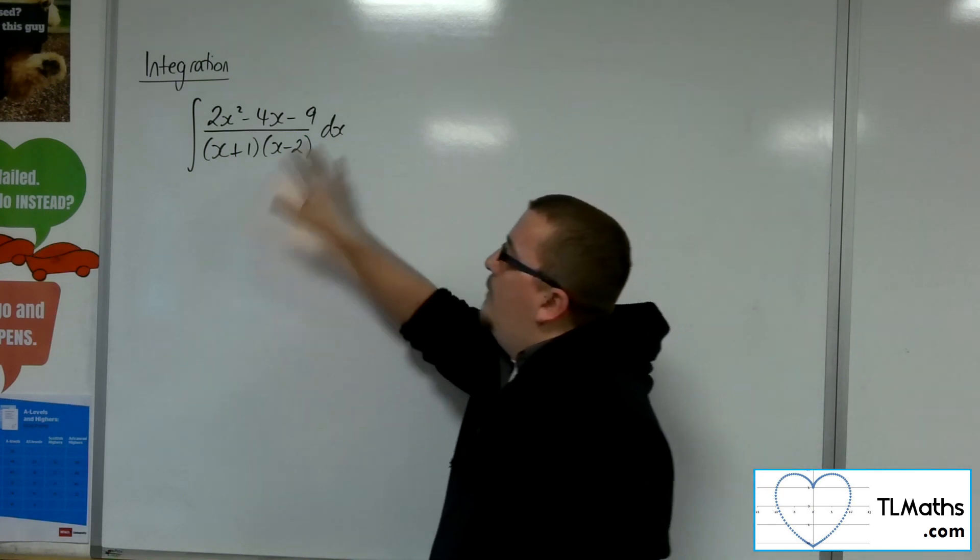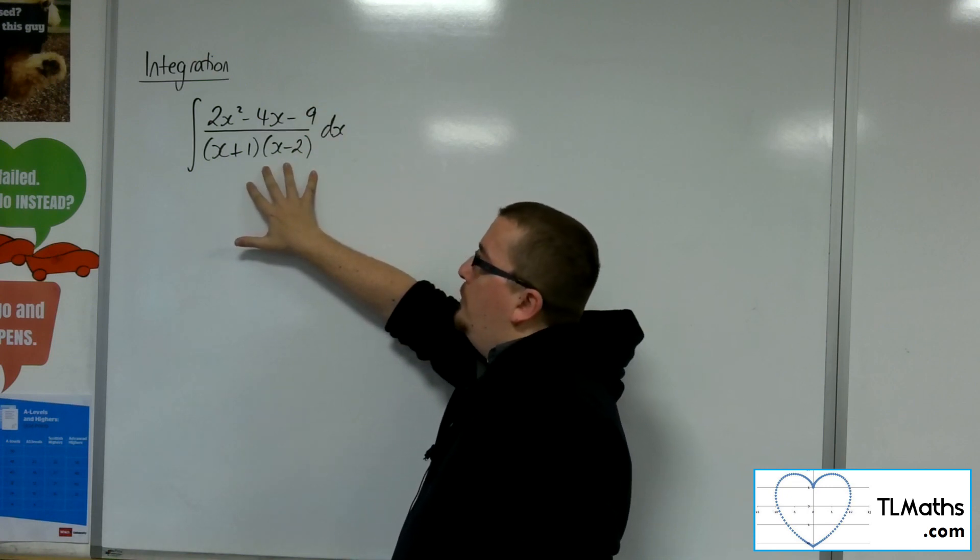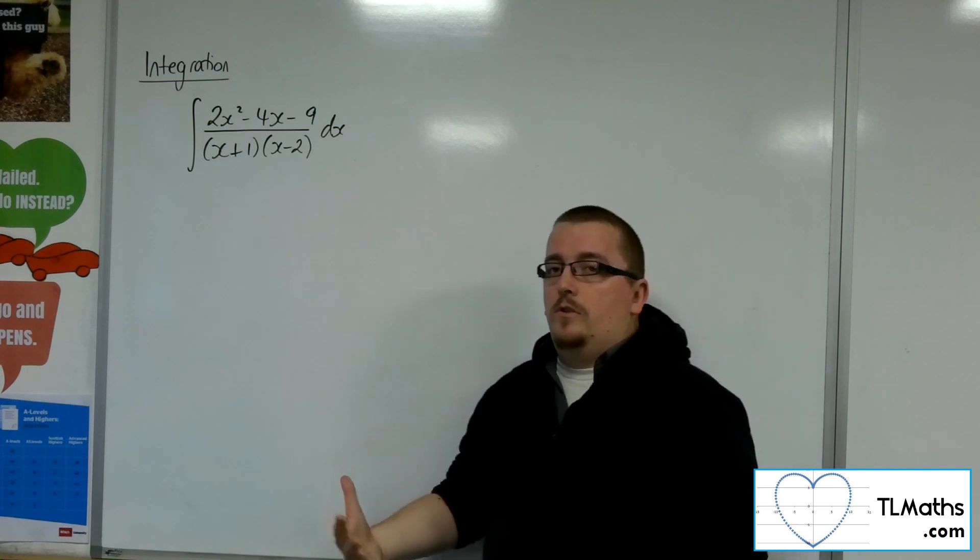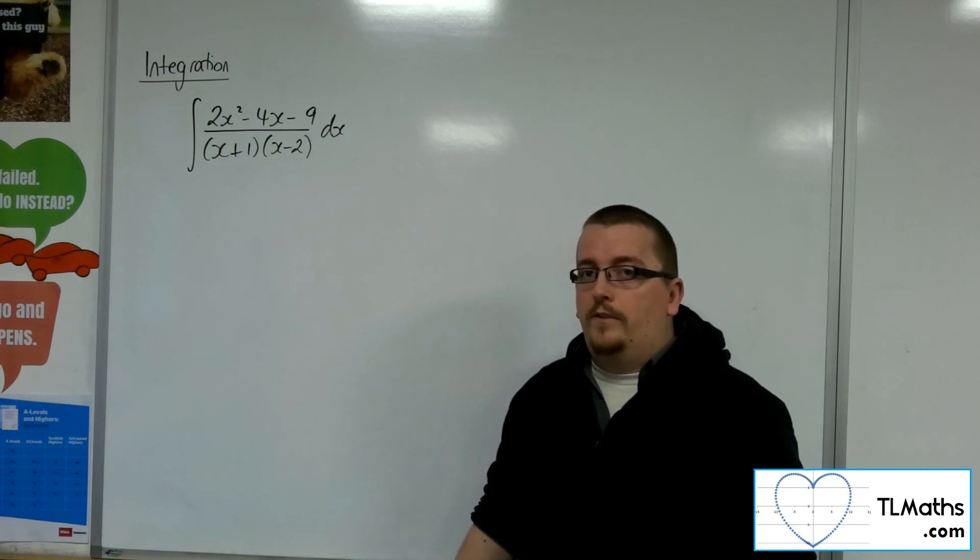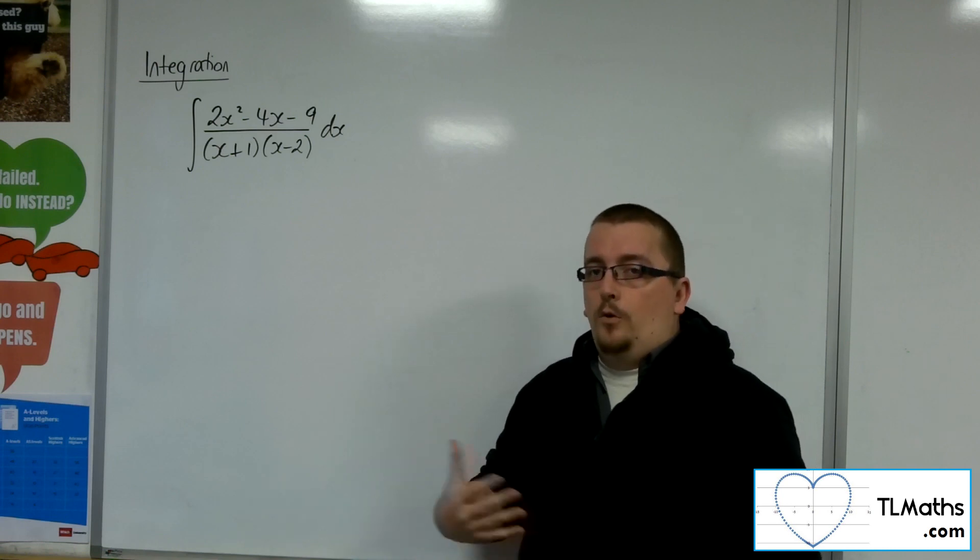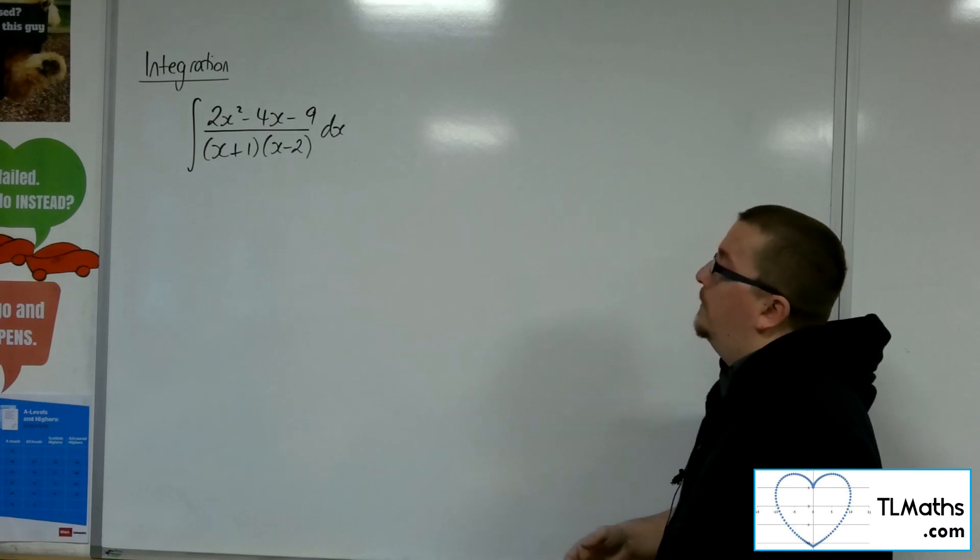And that's because the order of the numerator is x squared and the order of the denominator is x squared. And so you cannot go directly into partial fractions with this. We've got to go through a process of polynomial division first in order to simplify the fraction down. So it adds an extra layer of complexity to it.